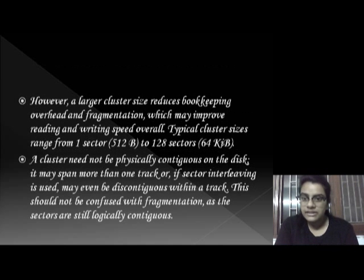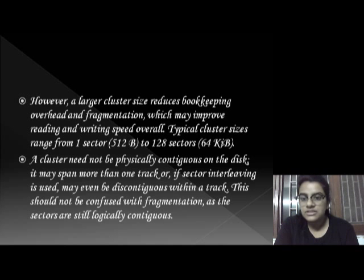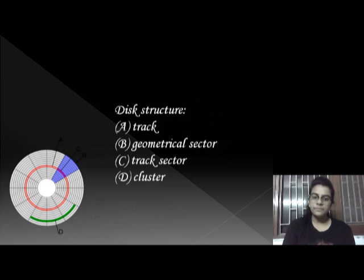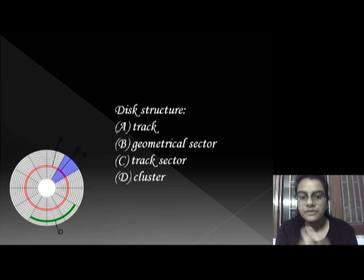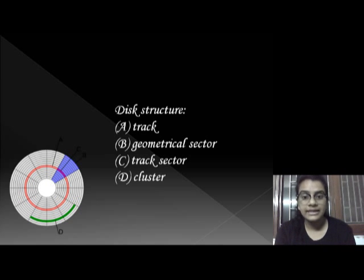This image shows a disk structure. You can see there are four things: A is the track, B is the geometrical sector, C is the track sector, and D is the cluster.